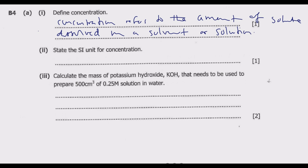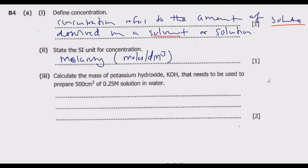Part A, number 2: state the SI unit for concentration. The unit for concentration is molality, which is the same as the number of moles per decimetre cubed (mol/dm³). The decimetre cubed represents the volume of the solution, the moles refer to the solute, and the solvent is the liquid measured in dm³.